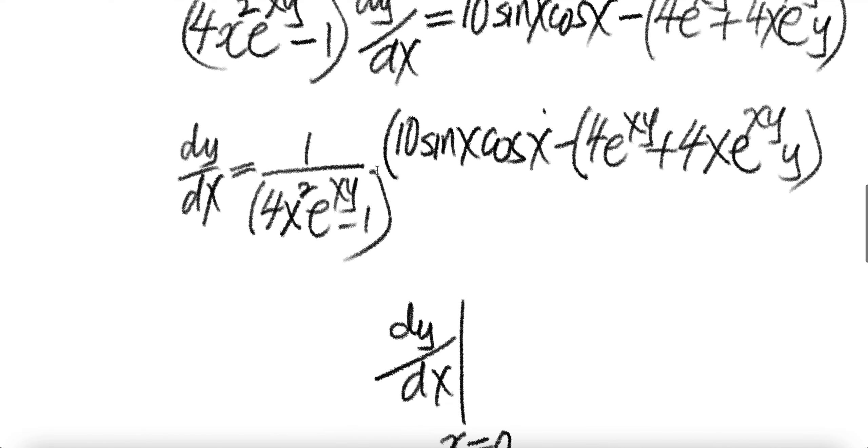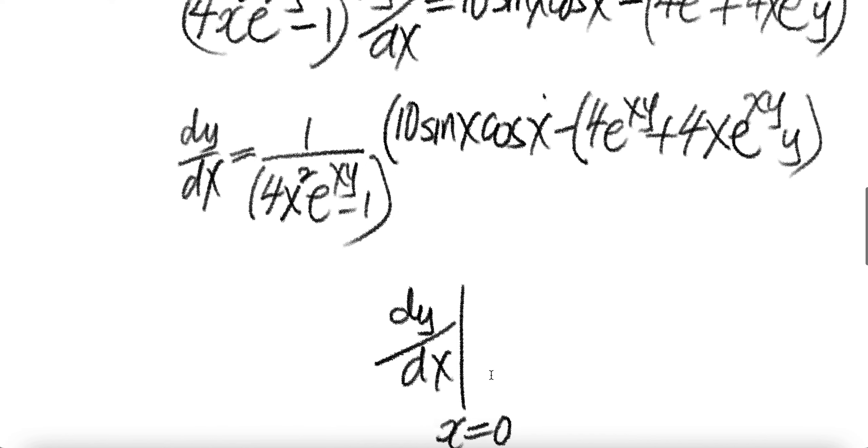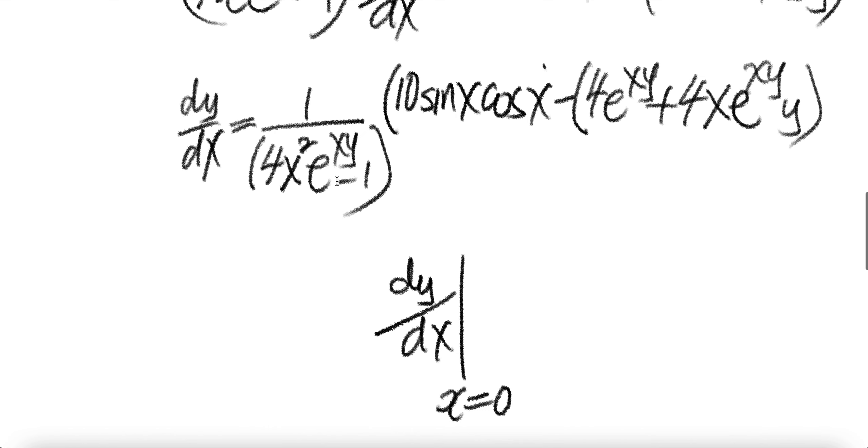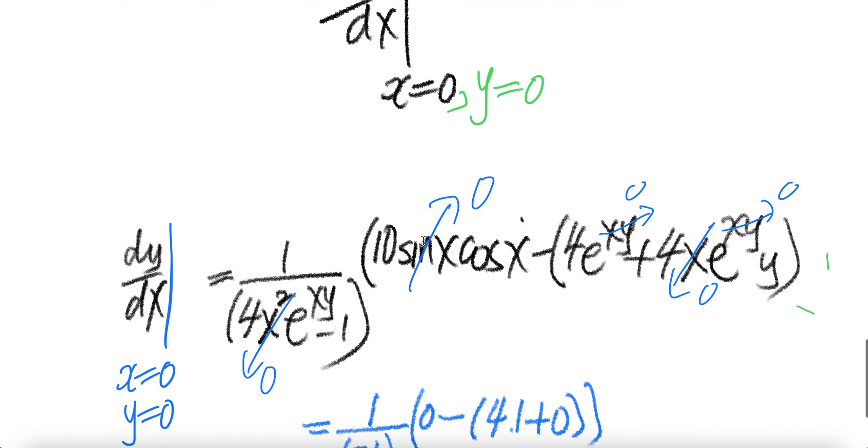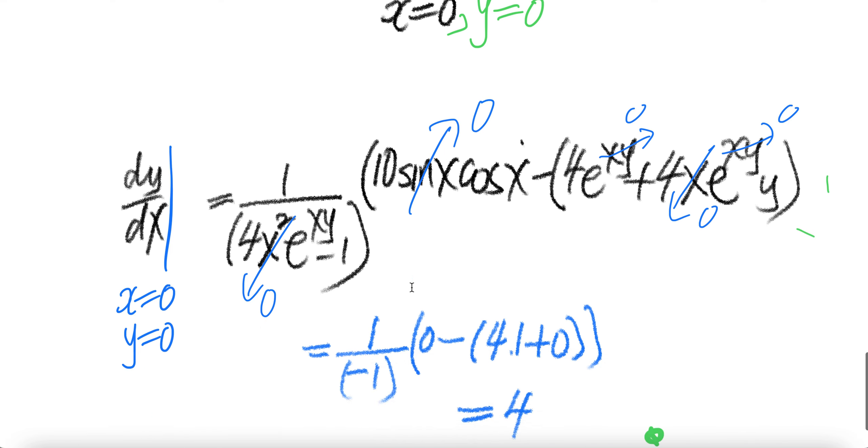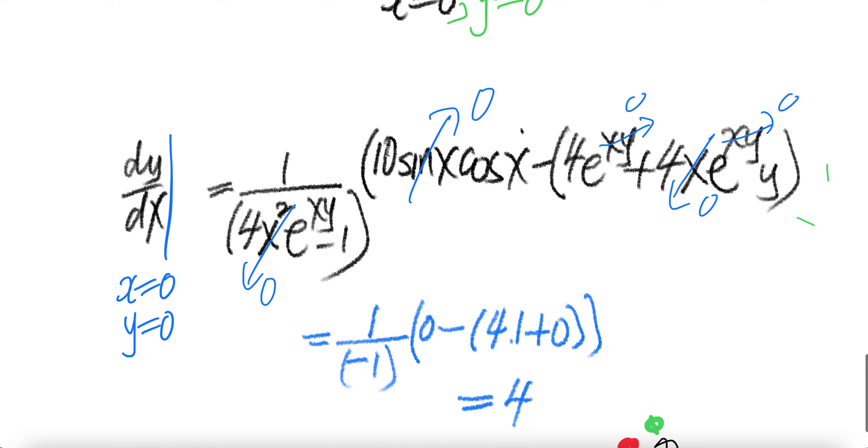So now you have enough information to plug in for the derivative x equals zero and y also equals zero as we saw. Plug those things here and then you get dy/dx at x equals zero, y equals zero. At x equals zero, plug x equals zero and y equals zero, and I will let you guys do that.